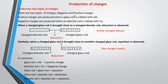Now we are looking at the production of charges. We have two types of charges: positive and negative. To produce a positive charge, you bring a glass rod and rub it with silk — silk is like a shiny cloth. If you rub a glass rod with silk, you will produce a positive charge on the glass rod. To produce a negative charge, you bring an ebonite rod and rub it with fur — the ebonite rod will acquire a negative charge.